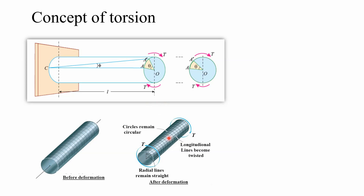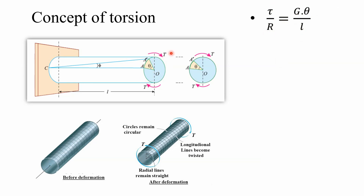The shear stress is denoted as tau. When you derive the relation between torsional moment, shear stress, theta, and the length of the shaft, the relation comes to be: tau by R equals G theta by L. Here tau is the shear stress intensity at the outermost layer, R is the radius of the shaft, G is the modulus of rigidity, theta is the angle of twist, and L is the length of the shaft. Since G, theta, and L are constants, shear stress intensity is directly proportional to the radius R.